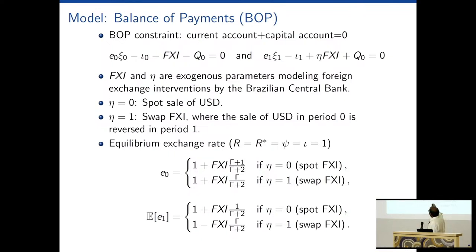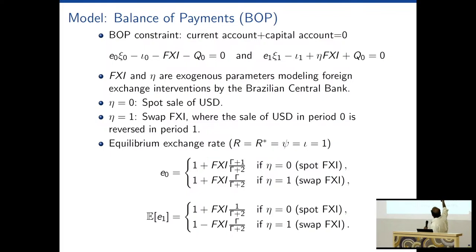Following the framework, we have balance of payment constraints in period 0 and period 1, including an FXI variable — classified as a sale of USD by the Brazilian Central Bank. We allow for a swap agreement: if the central bank sells USD at period 0, they buy it back at period 1. If eta equals 0 with no buyback, it's a spot sale of USD. If eta equals 1, you have a swap — sell USD reserves at period 0 and buy back at period 1.